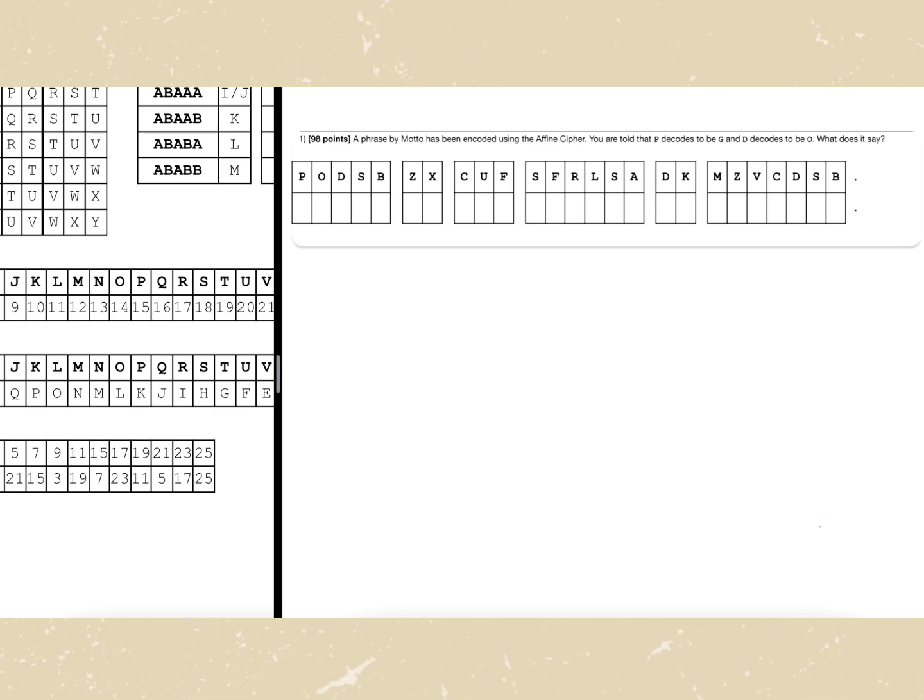First of all, in the cryptanalysis cipher there are two things you need to know. First is that they're always going to give you two letters, so this means that p decodes to be g and d decodes to be o. And the second part is that you always want to be solving for your a and b values first without trying to do it with any sort of intuition.